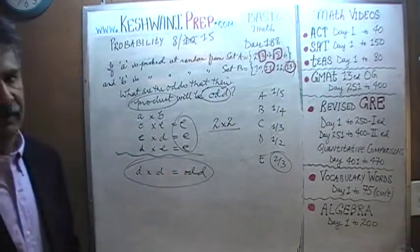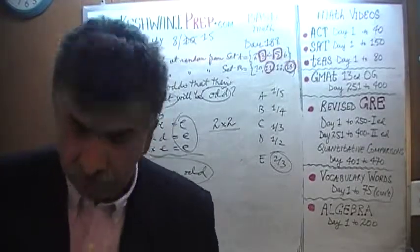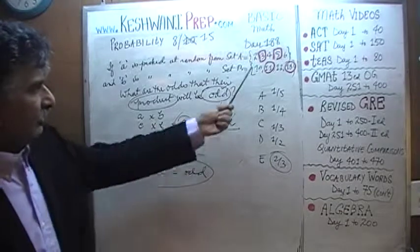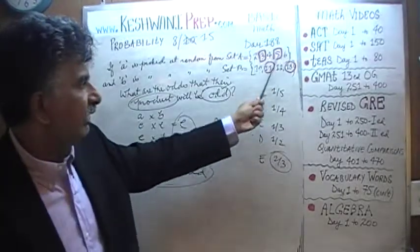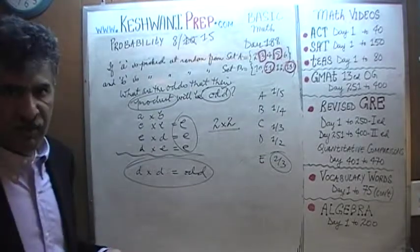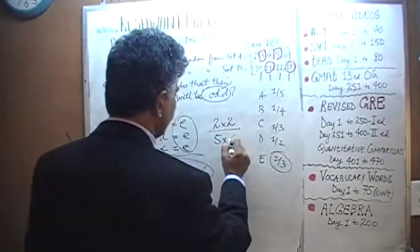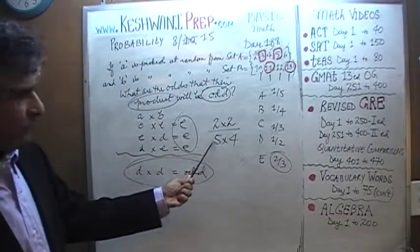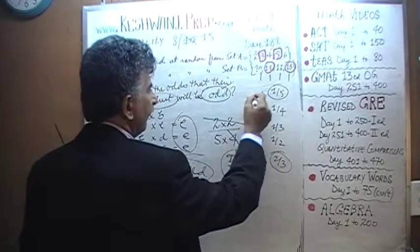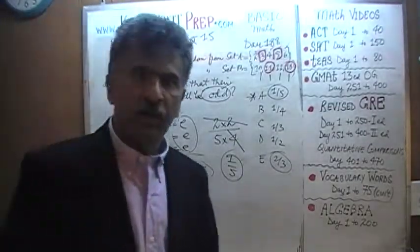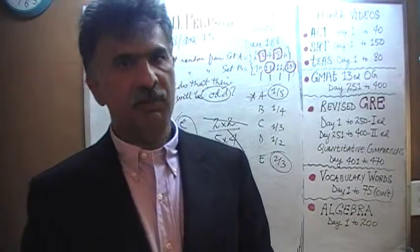We don't need to enumerate every case the long way. The four odd combinations are: 3 times 11, 3 times 13, 5 times 11, or 5 times 13. Set A has 5 members and set B has 4 members, so there are 20 total possibilities. Four out of 20 gives us 1 fifth. The answer is one fifth — a 20% chance the product is odd, and therefore an 80% chance the product is even. See you tomorrow!